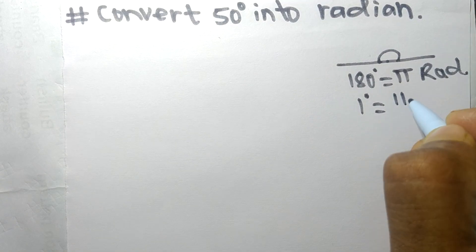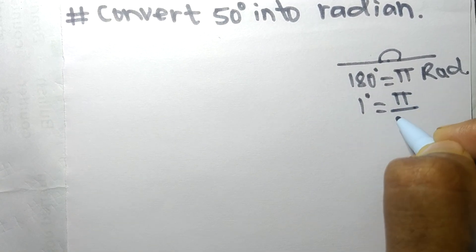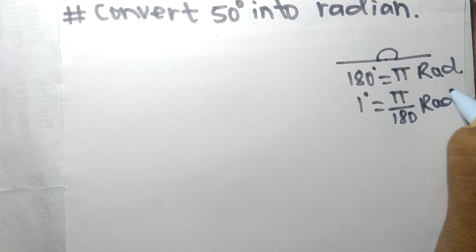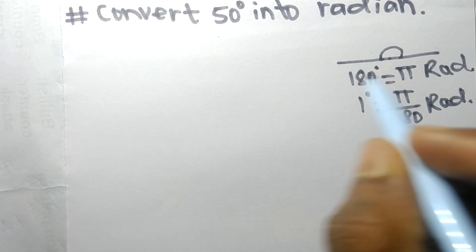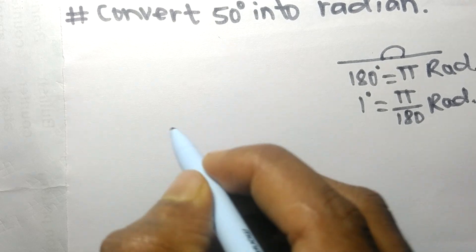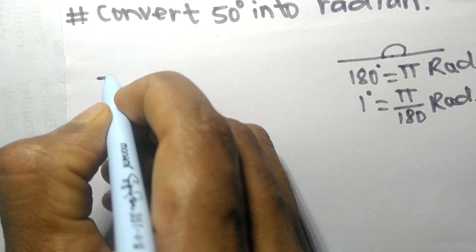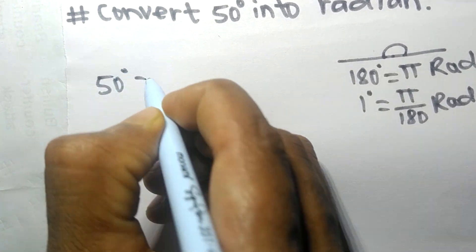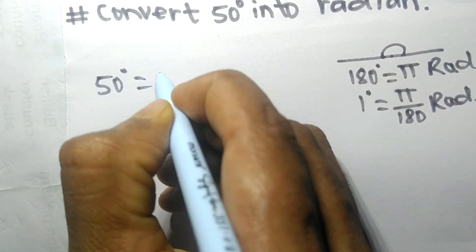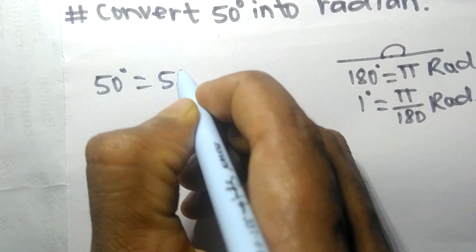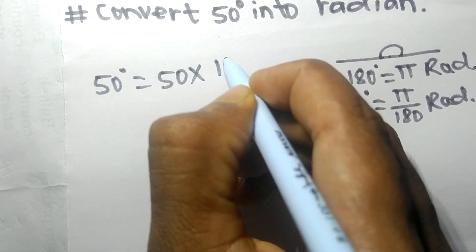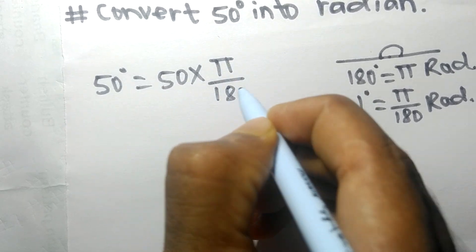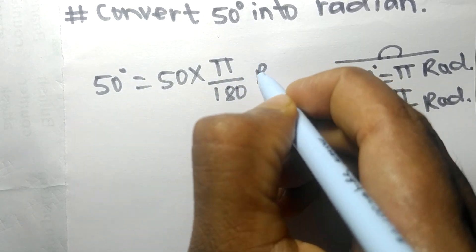So we have 50 degrees. 50 degrees is equal to 50 into pi by 180 radians.